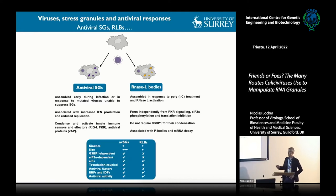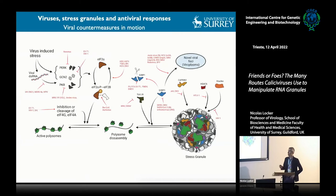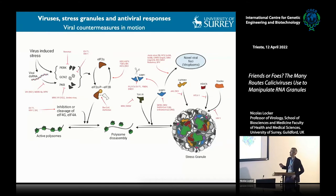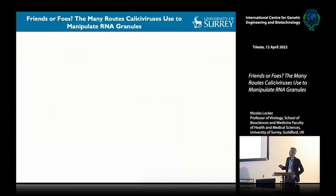I've summarized some of their properties and I'll come back to that table for the latter part of the talk. Because all of these bodies can be deleterious to viral replication, viruses have developed many ways of counteracting stress granule assembly. This shows the sheer variety of counteracting measures that viruses have evolved to evade stress granule responses.